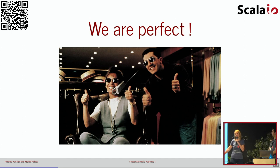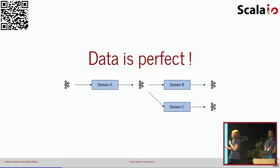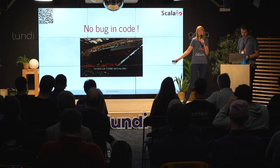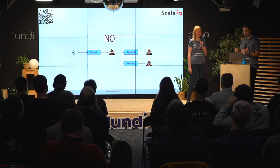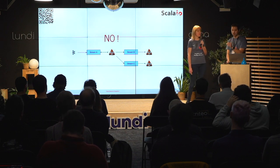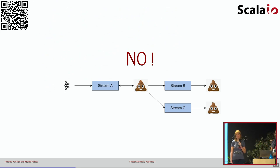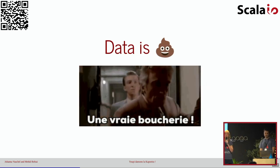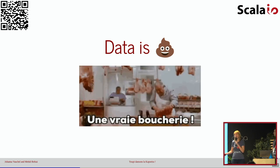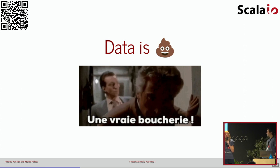Et bien sûr, nous sommes parfaits, c'est évident. Notre pipeline de données est parfaite. Il n'y a jamais d'erreurs dans nos données, jamais d'anomalies. On pense toujours à tous les cas quand on code, c'est bien connu. Du coup, il n'y a jamais de bug. Tu bluffes Martoni. Je ne suis pas du tout d'accord. Il y a de très nombreuses situations où des bugs peuvent intervenir. Il suffit d'une seule erreur pour que cette donnée erronée soit propagée dans toute la data pipeline. On s'en rend compte souvent trop tard, c'est-à-dire après le client. Et pour corriger, c'est souvent un peu compliqué.